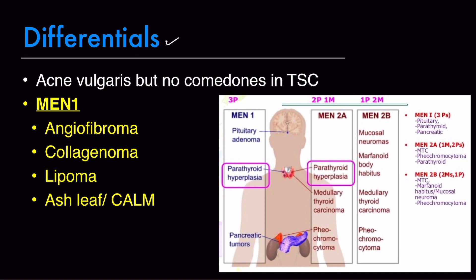The differentials of tuberous sclerosis include acne vulgaris — it looks like adenoma sebaceum but there are no comedones in tuberous sclerosis — and multiple endocrine neoplasia type 1, in which there are angiofibromas, collagenoma, lipomas, and ash leaf or café-au-lait macules. A chart explaining MEN type 1, type 2, and type 3 is very important for MCQs.